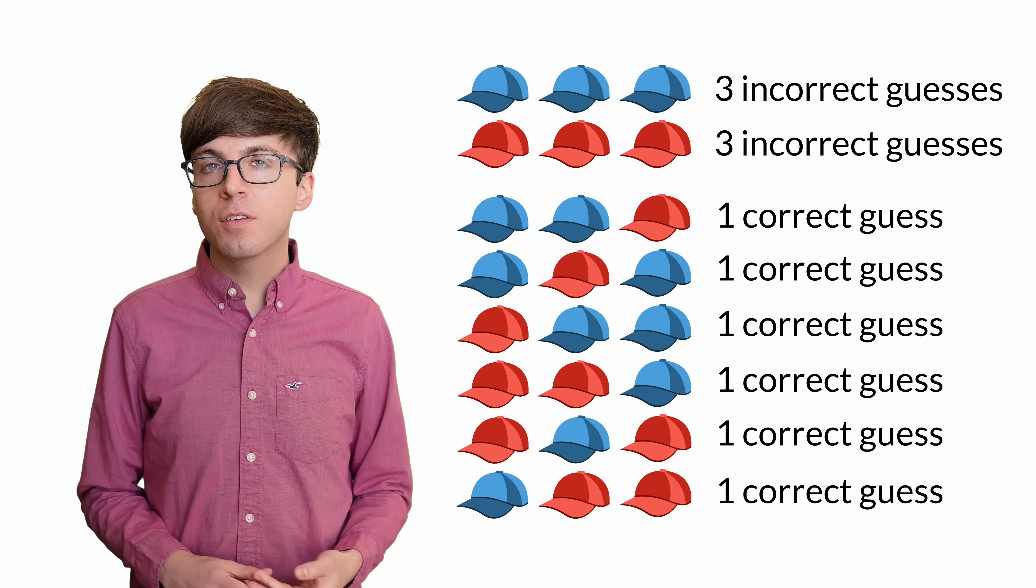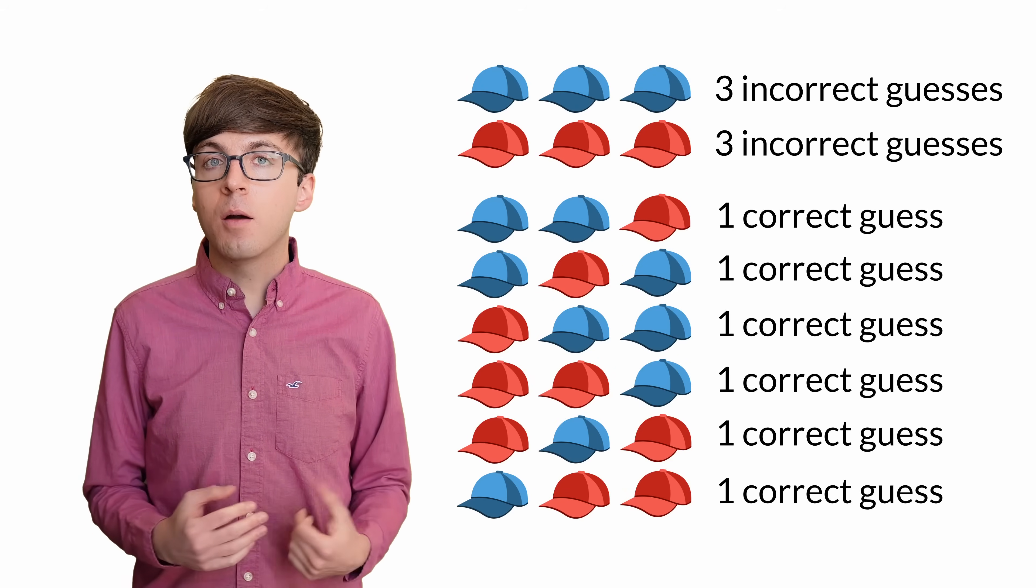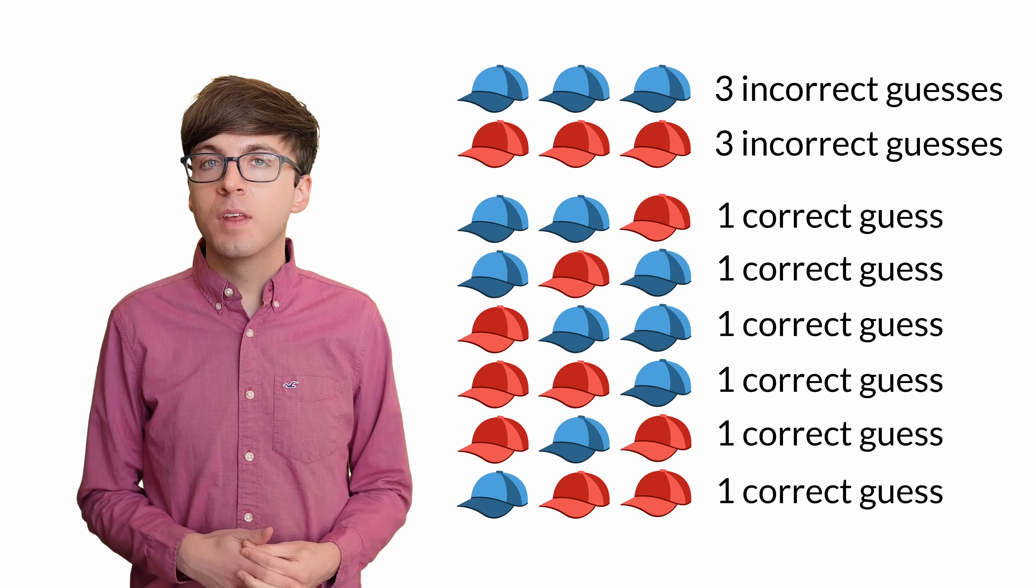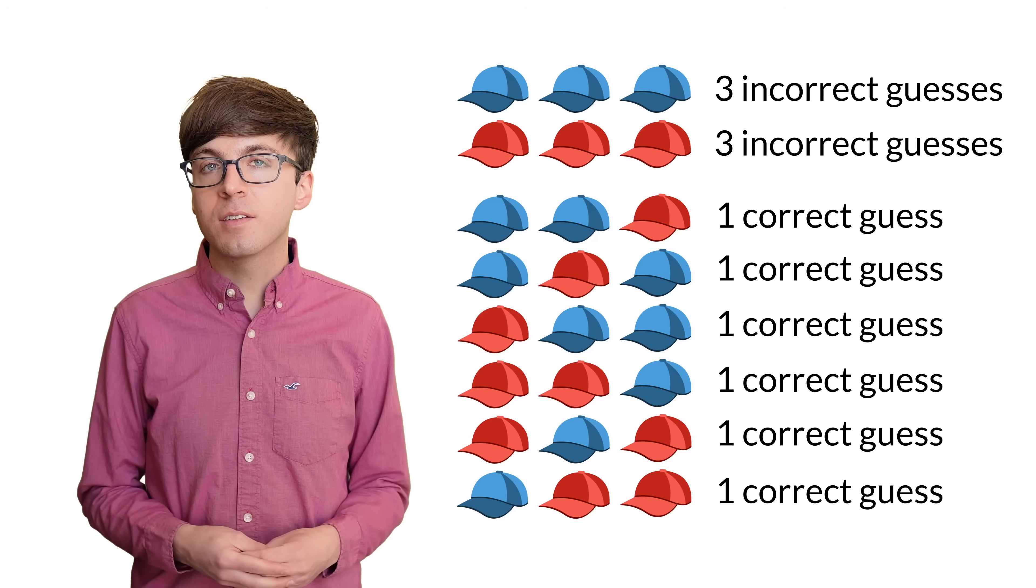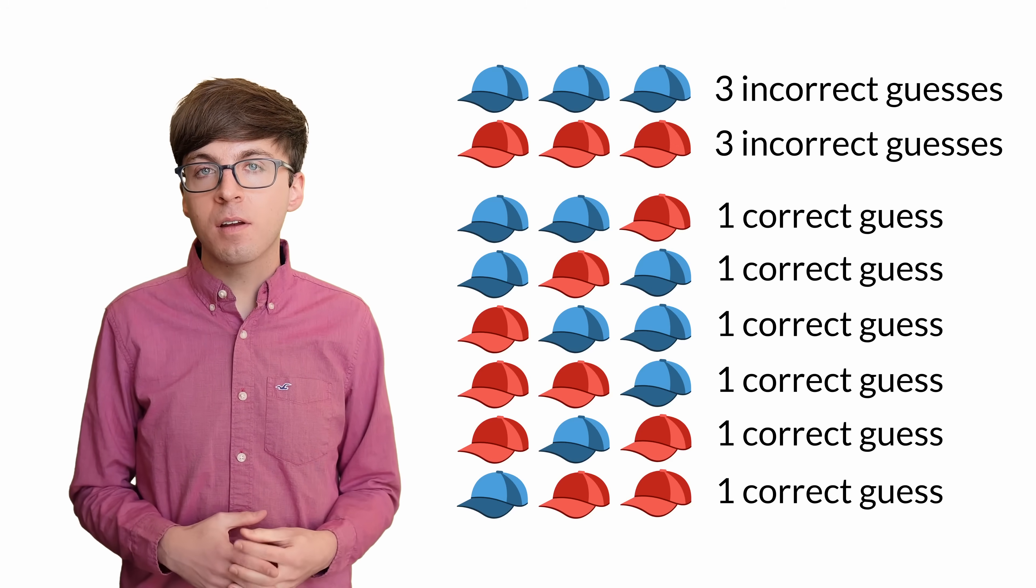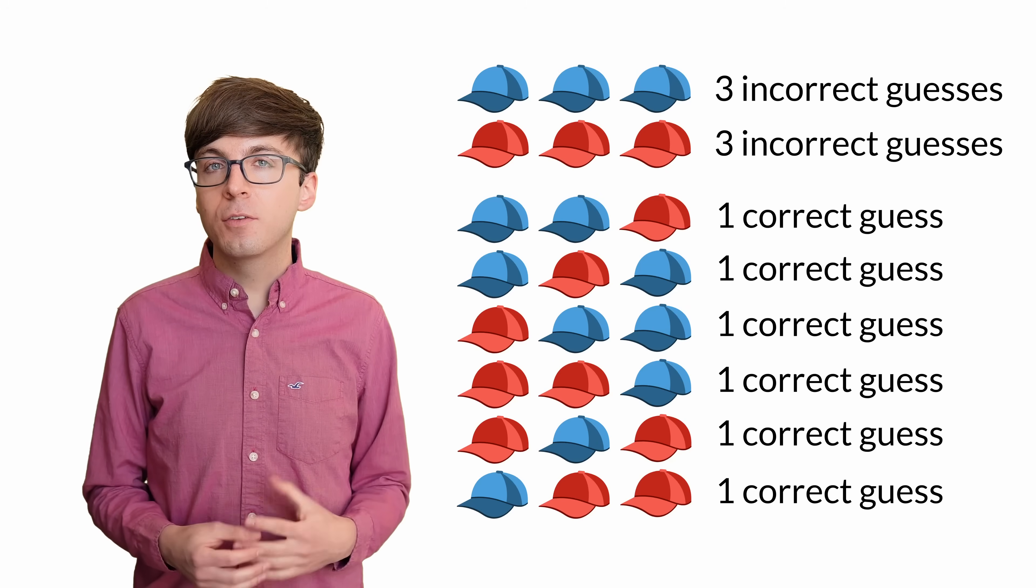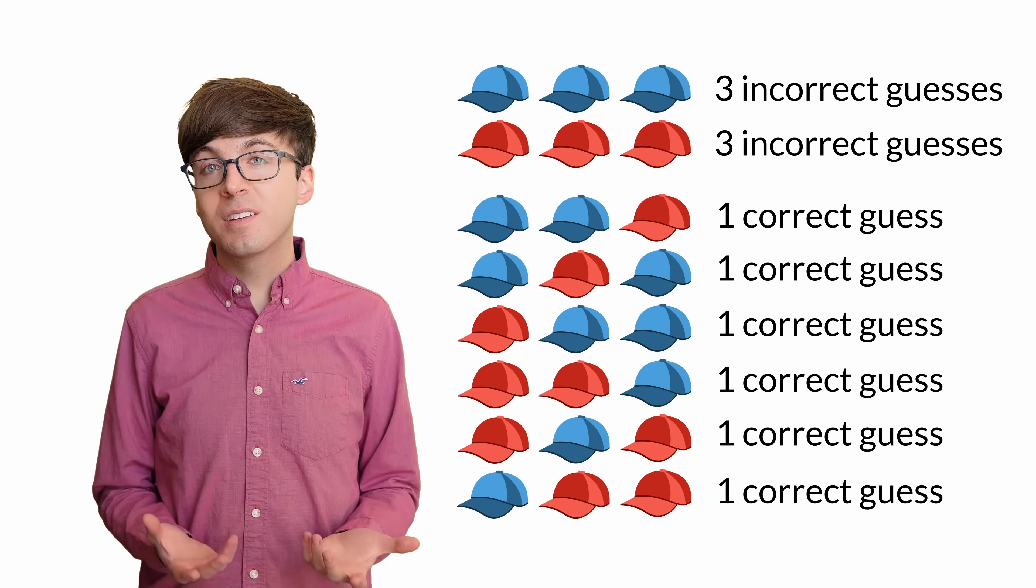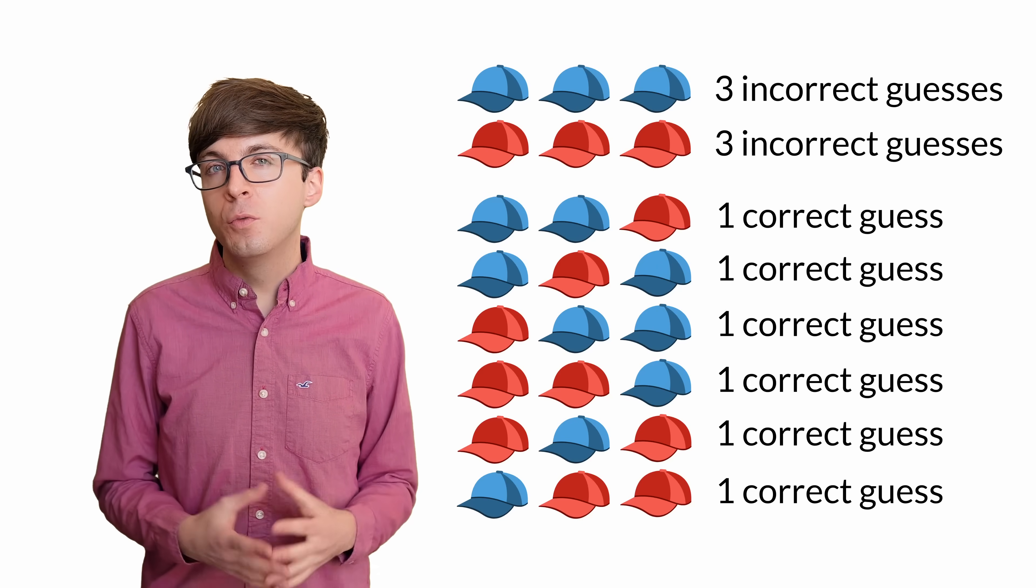Note in our chart, the prisoners make a total of six correct guesses and six incorrect guesses among all the possible outcomes. But the reason they have the advantage is that they have bunched up their incorrect guesses to happen three at a time, while their correct guesses happen one at a time. So their six correct guesses fill up six different outcomes, and their six incorrect guesses fill up only two possible outcomes.